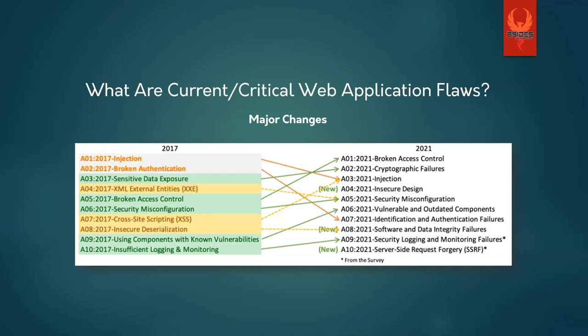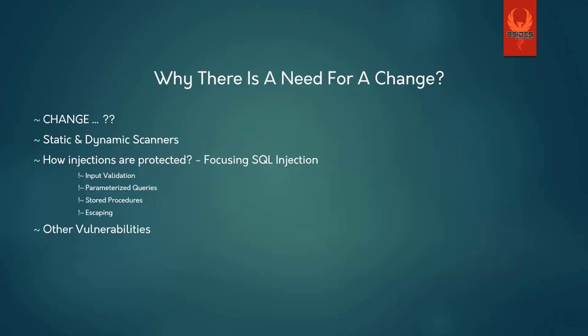From 2017 to the 2021 update, there have been major changes. Previously, injections were the most critical item. The major change I'll focus on is that broken access control moved from A5 to A1. This includes session management, insecure direct object references (IDORs), privilege escalations, and more. We need to understand why this change was necessary.